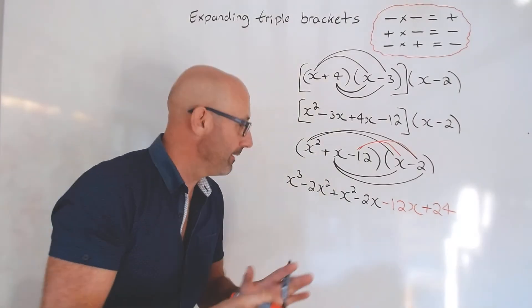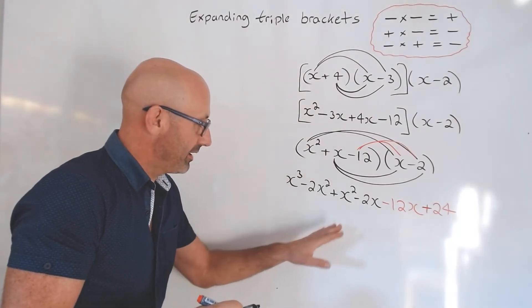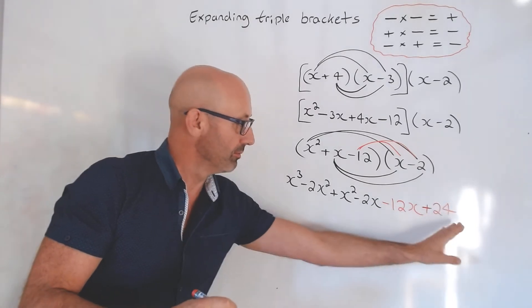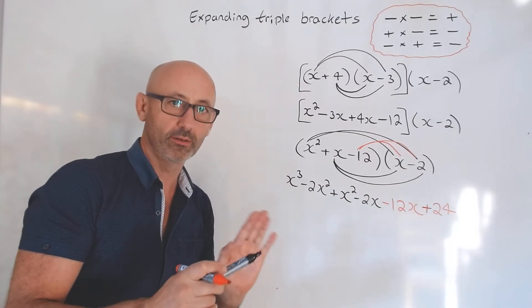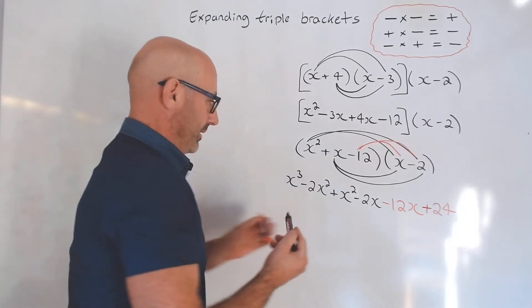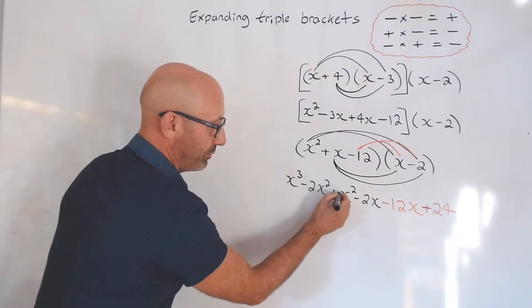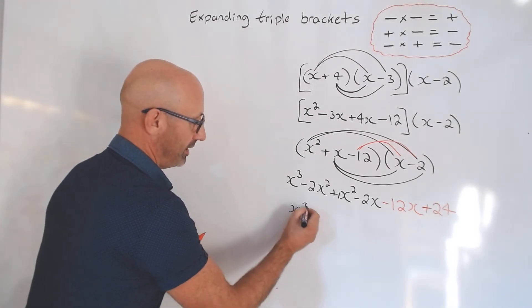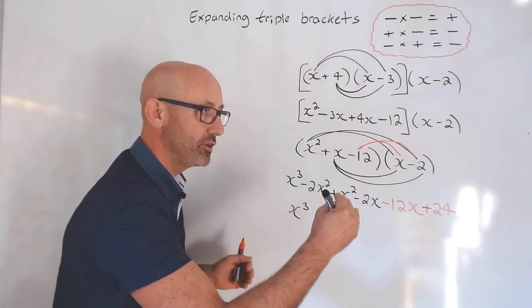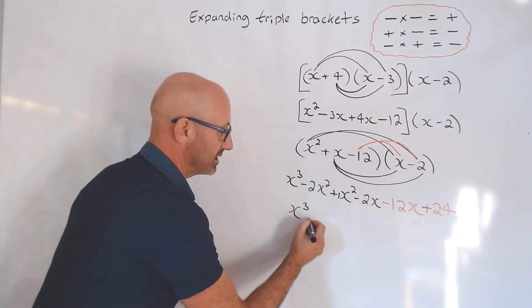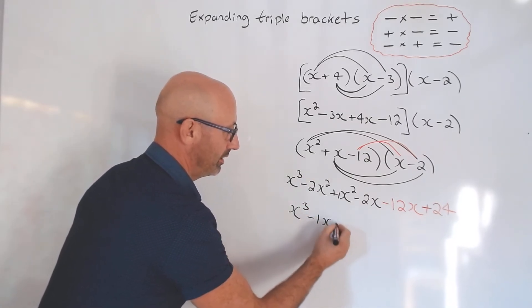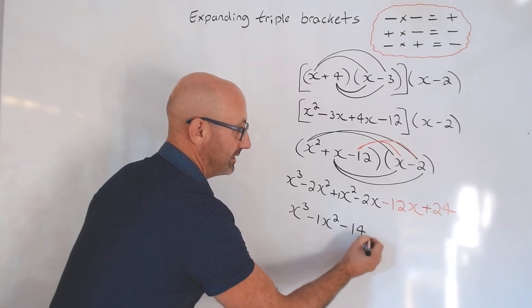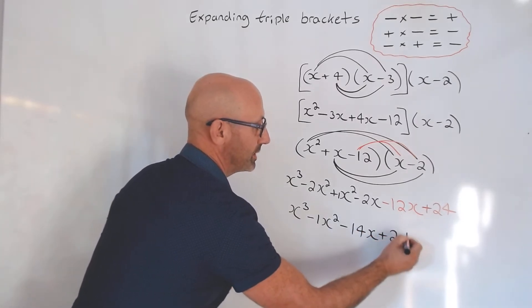Then finally you can only put together things that are x squared or x or numbers or x cubed. I would always recommend you put in a 1 there, so that is kind of 1x squared. We've got x cubed, minus 2 add 1 is going to be minus 1, and that is going to be minus 14x add 24.